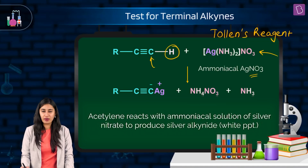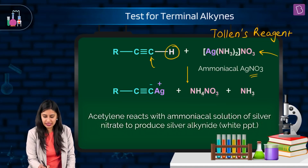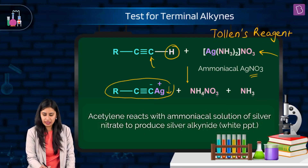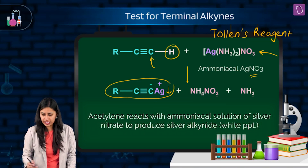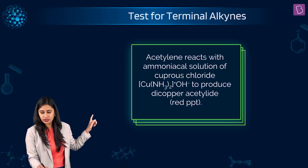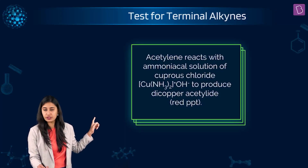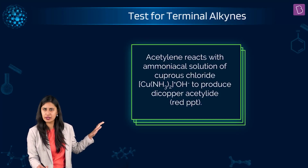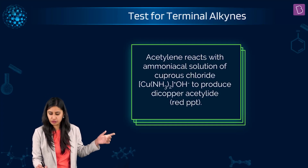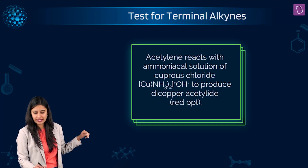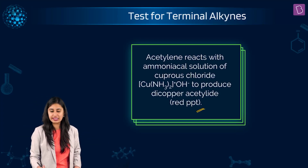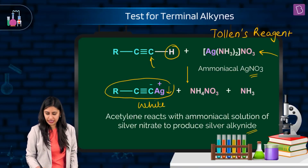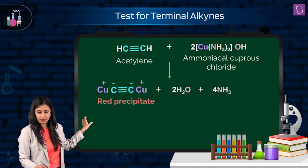What is going to happen is this species is formed, and it's a precipitate — observable from the naked eye. Acetylene also reacts with ammoniacal solution of cuprous chloride in a very similar reaction, but here the color of the precipitate will be different. We get di-copper acetylide, and the red precipitate is formed. So here we get a white ppt, and here we get a red ppt.